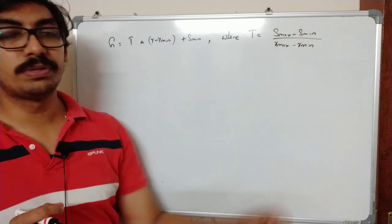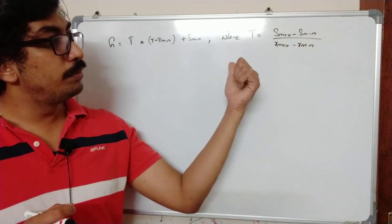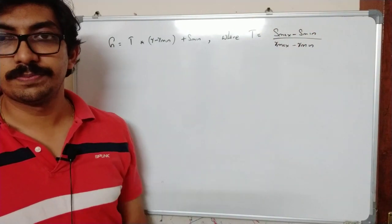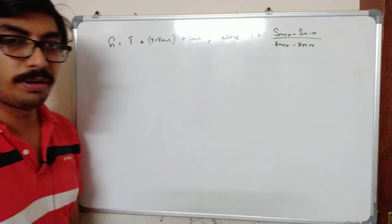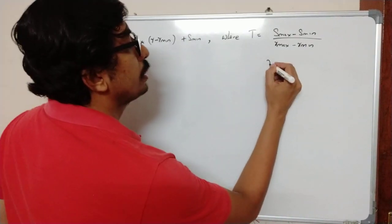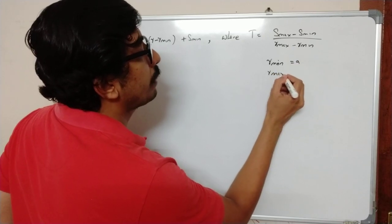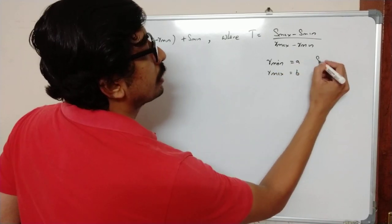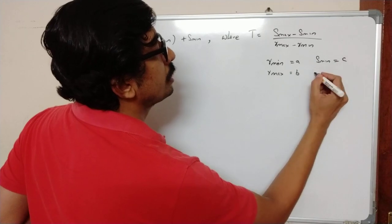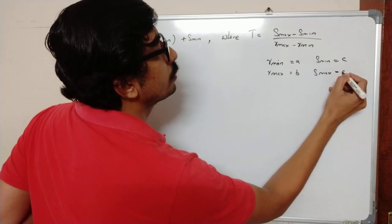Where R max and R min are the maximum and minimum gray level intensity values of the original image, and S max and S min are the new minimum and maximum intensity values. So from our question you can see R min was A and R max was B. Similarly S min should go to C and S max should go to D.